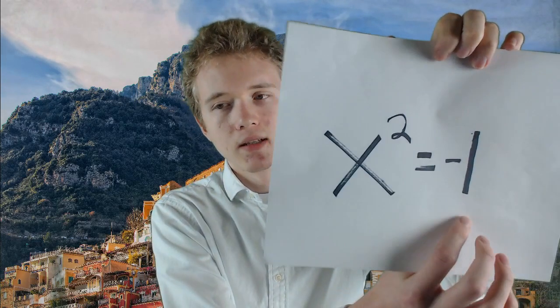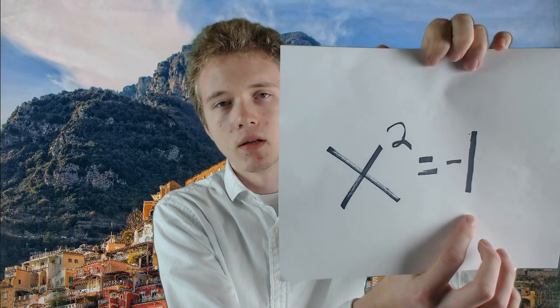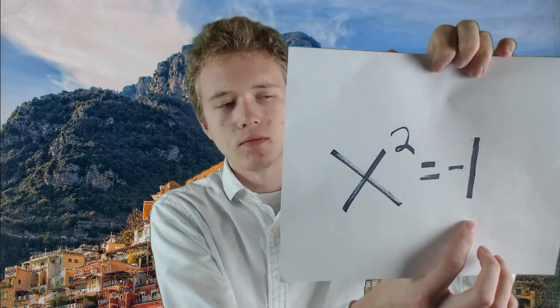Hello everyone! Say you want to find a number such that when you multiply it by itself, you get negative 1. How would you go about finding this number?